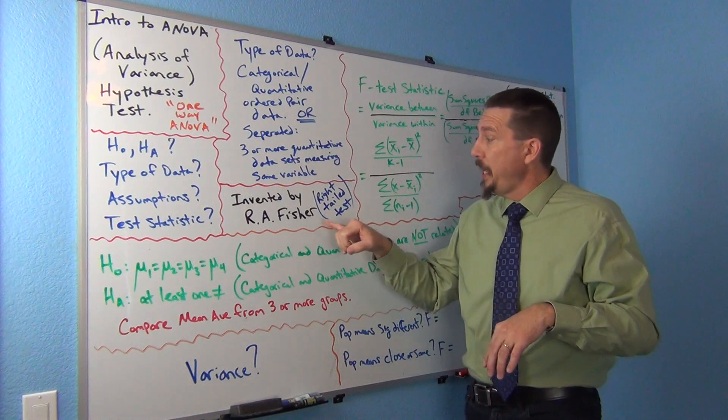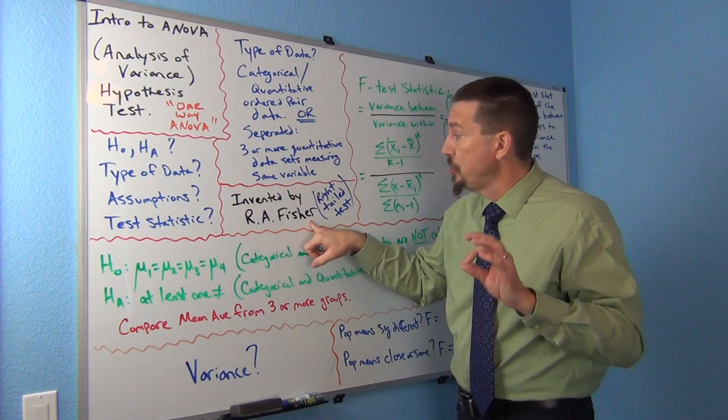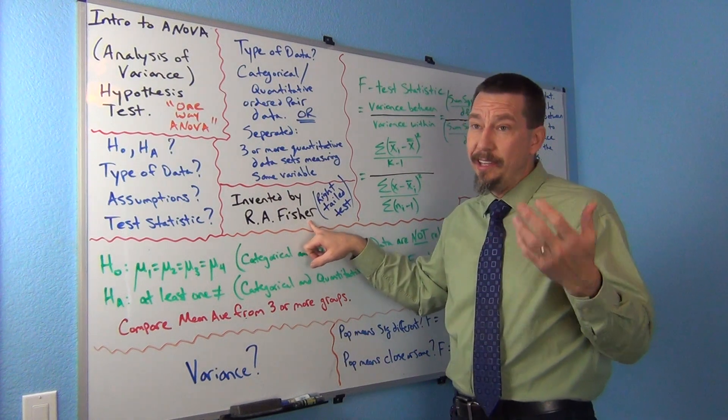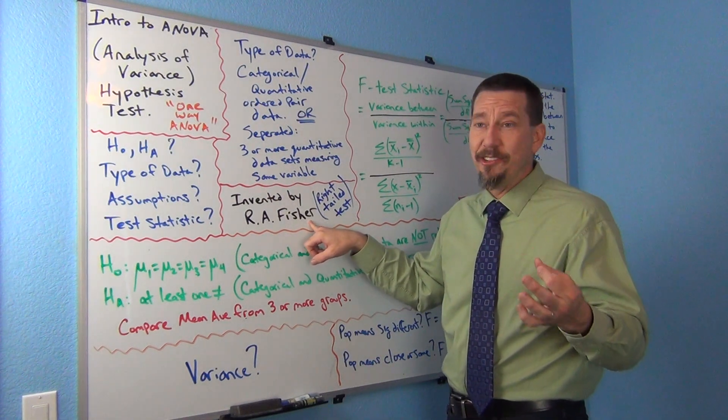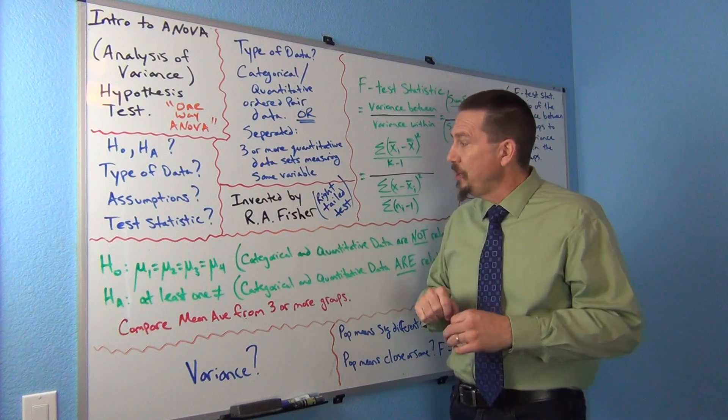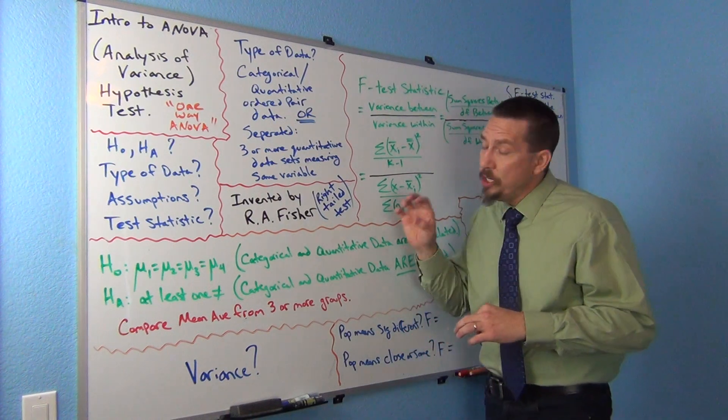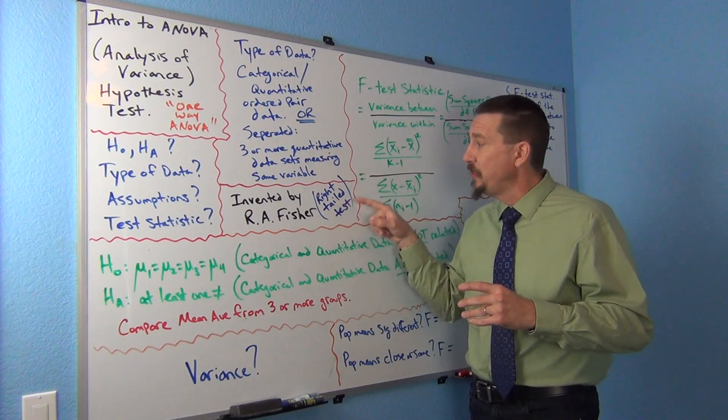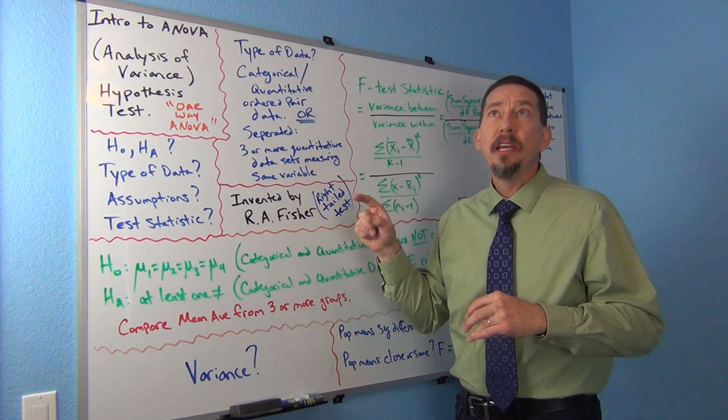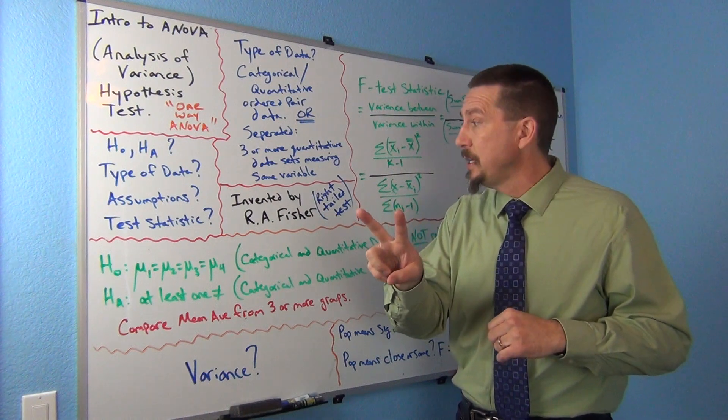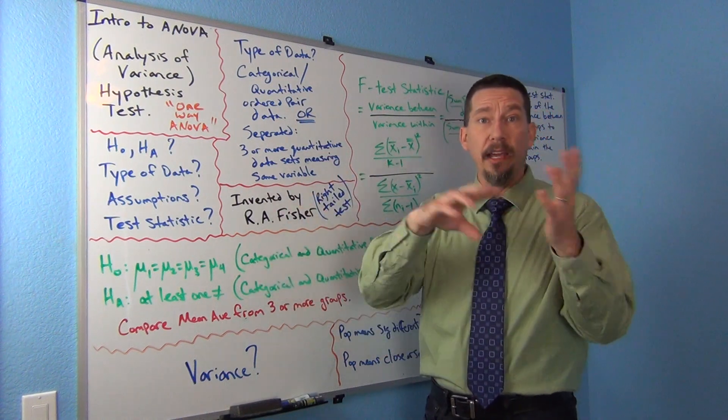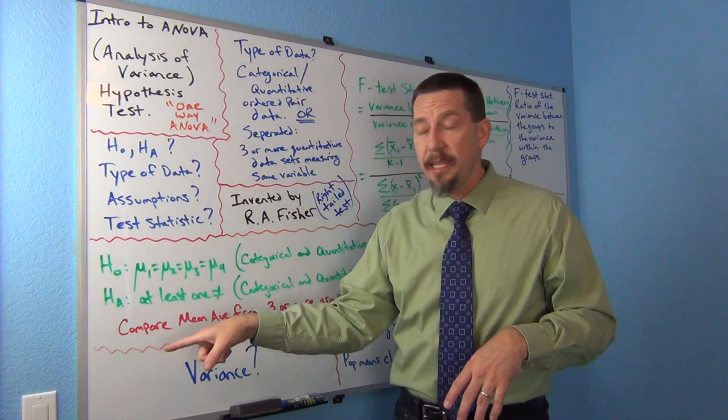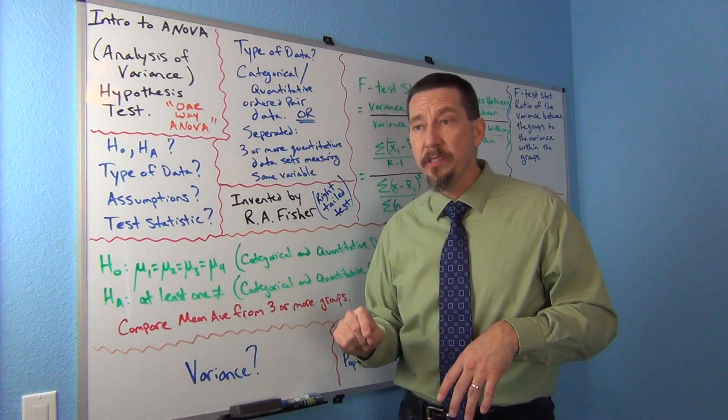ANOVA was actually invented by a very famous statistician, R.A. Fisher. He's one of the fathers of statistics. He invented a lot of the stuff that we teach you in intro stats. Very famous. Also, the ANOVA test, the one way ANOVA test is a right tail test. Now that's very interesting because when we had the two population mean test, it could be two tail, left tail, right tail, if it was greater than or less than in the alternative hypothesis or not equal.